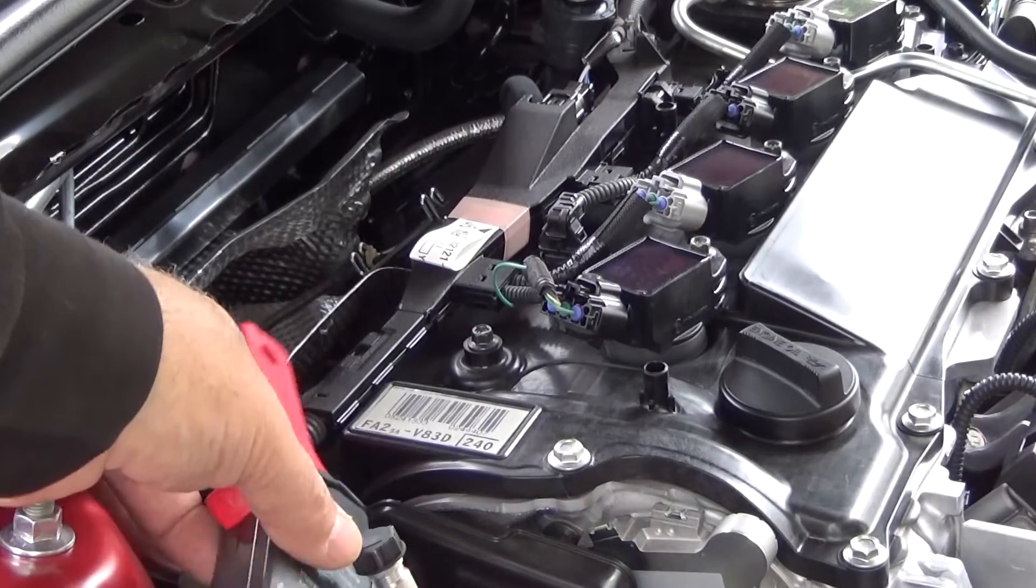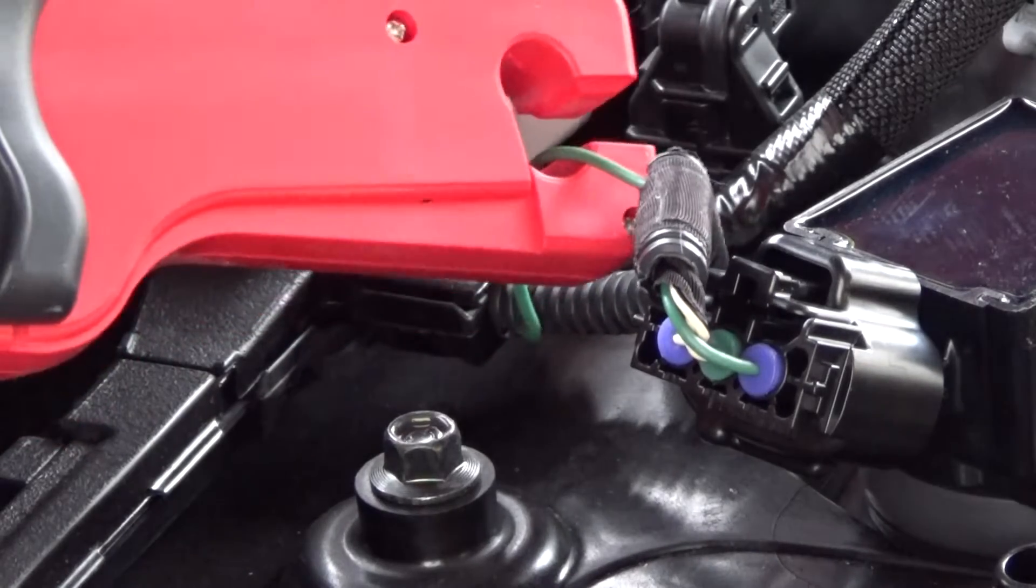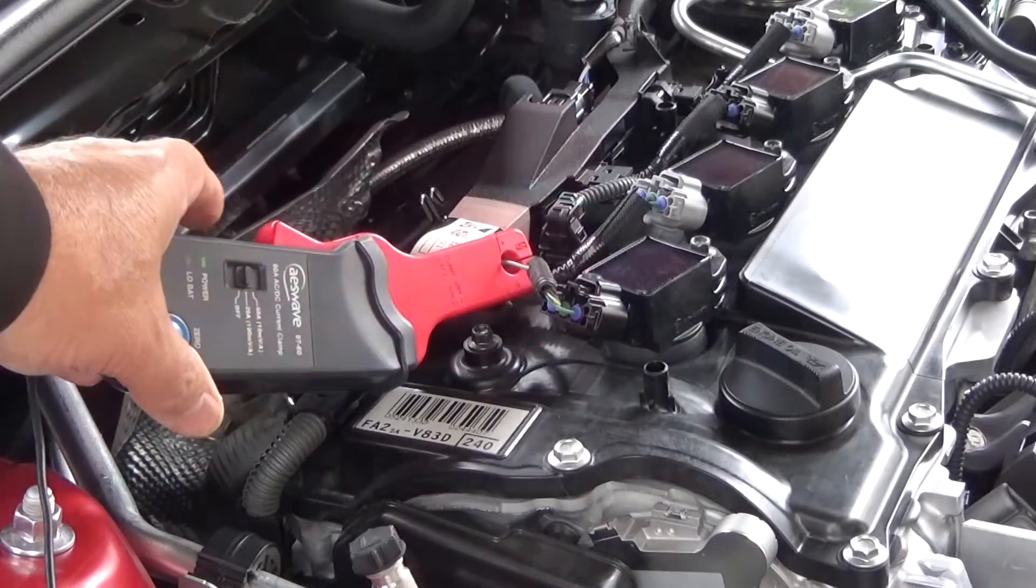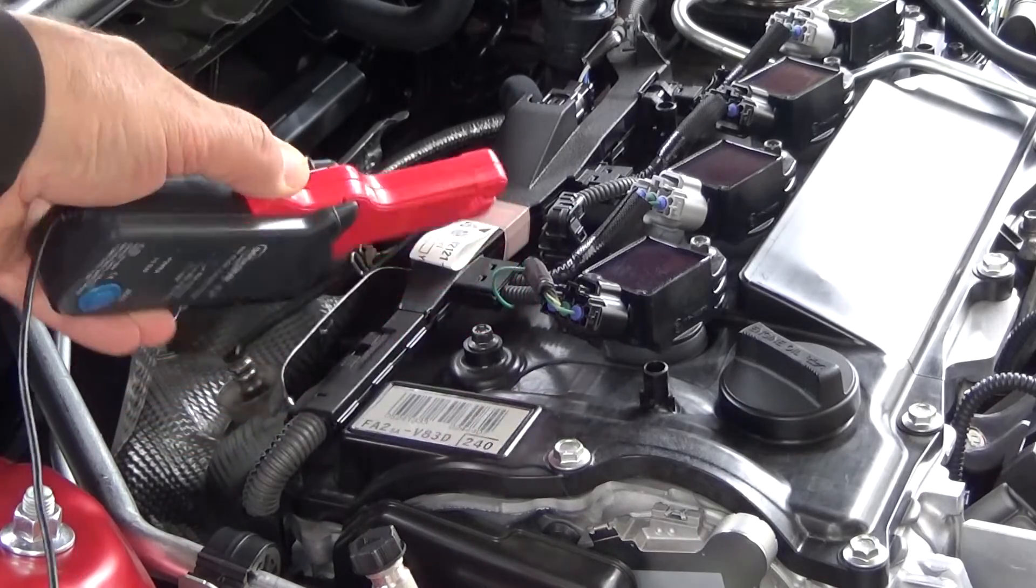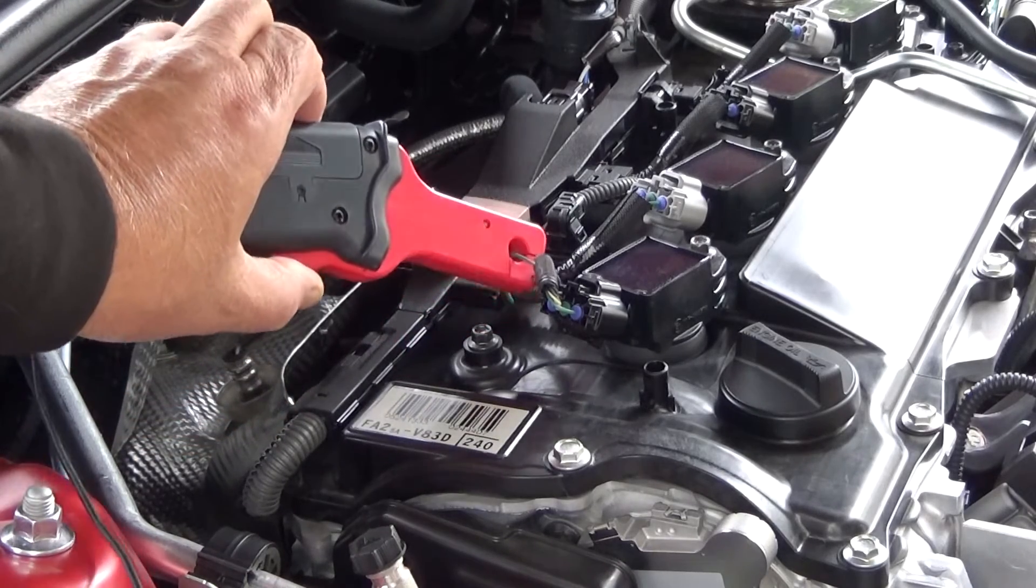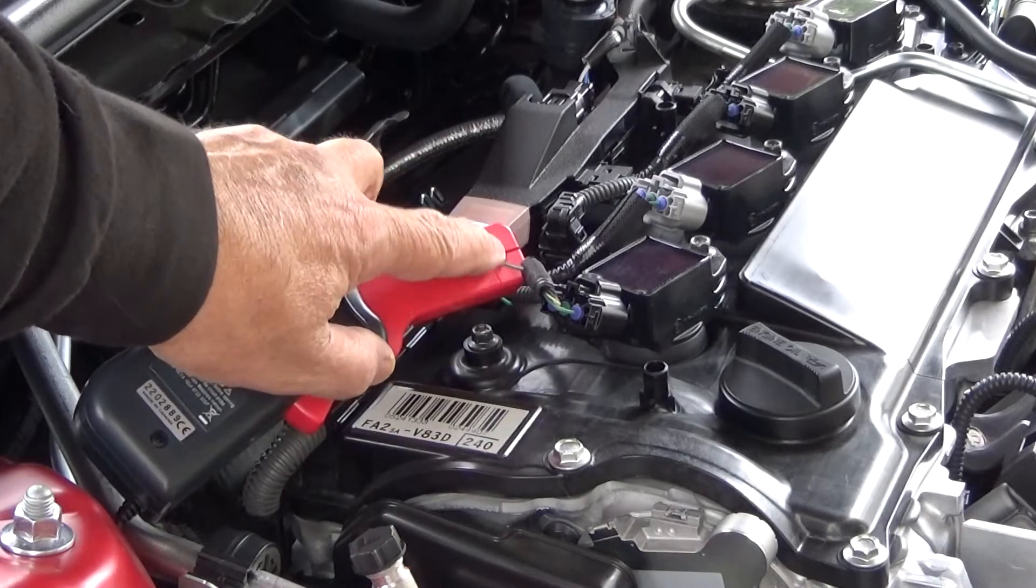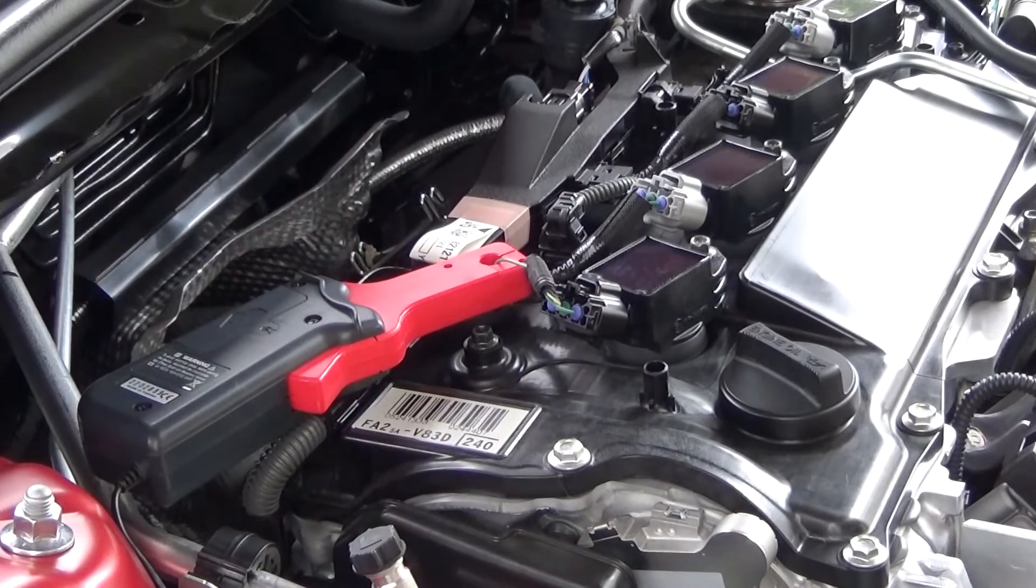We're just going to come over here and clamp this amp clamp right around that coil wire just like that. If the pattern happens to be upside down for some reason, I can flip it over. You just have to make sure that clamp gets completely clamped when you use this tool.